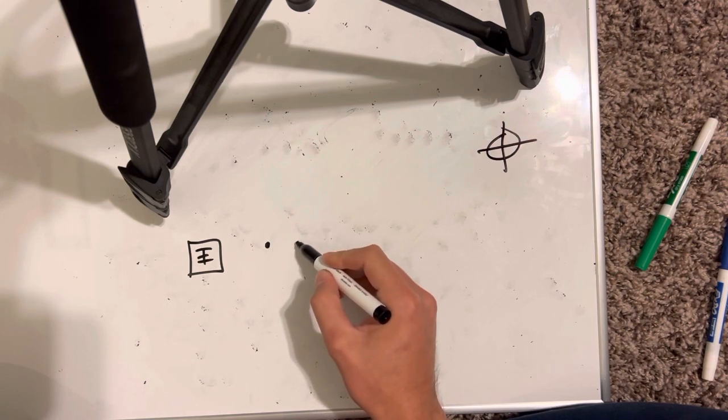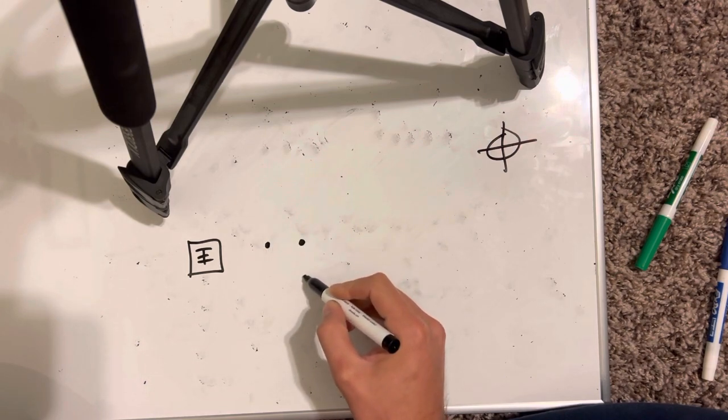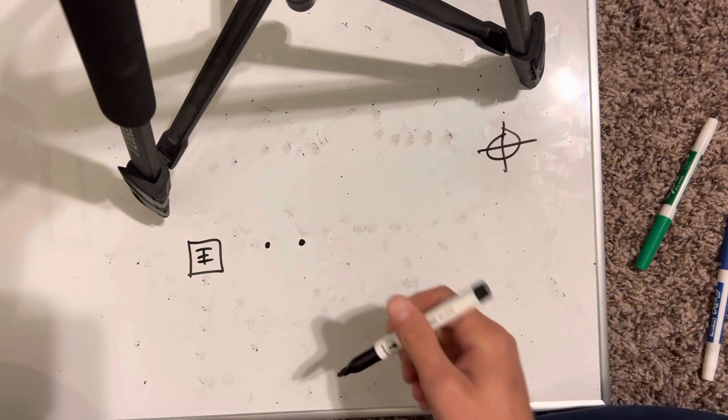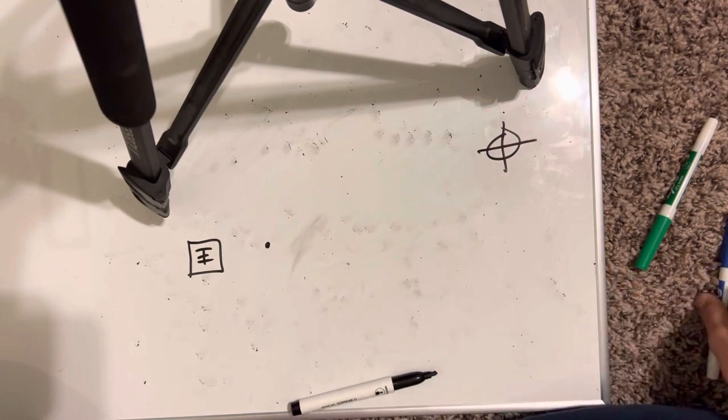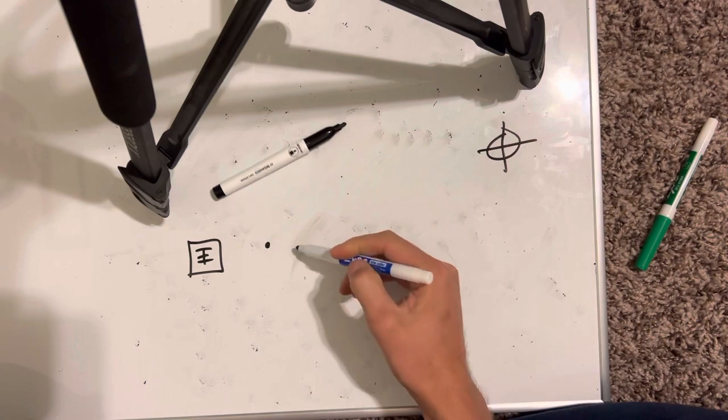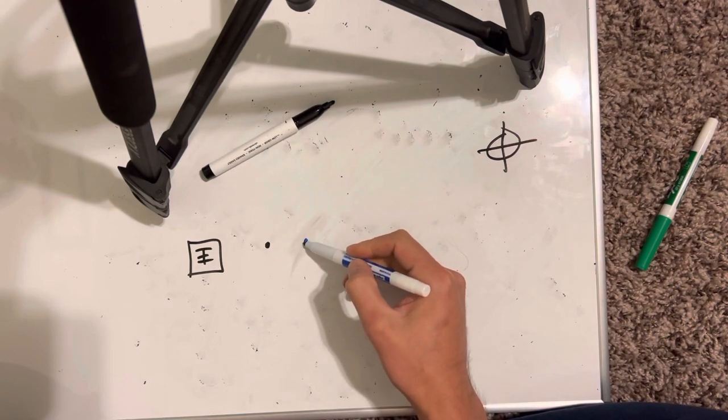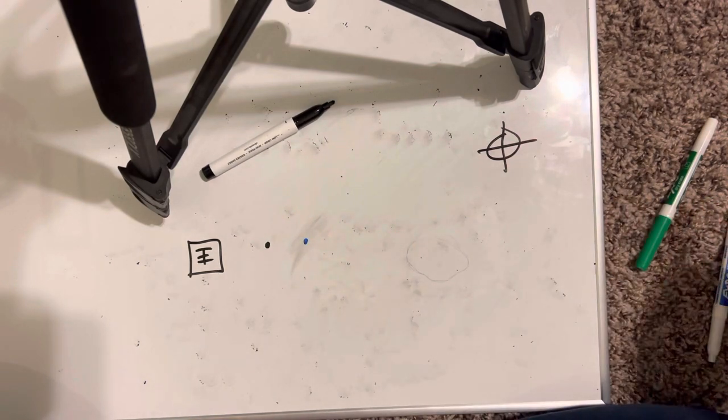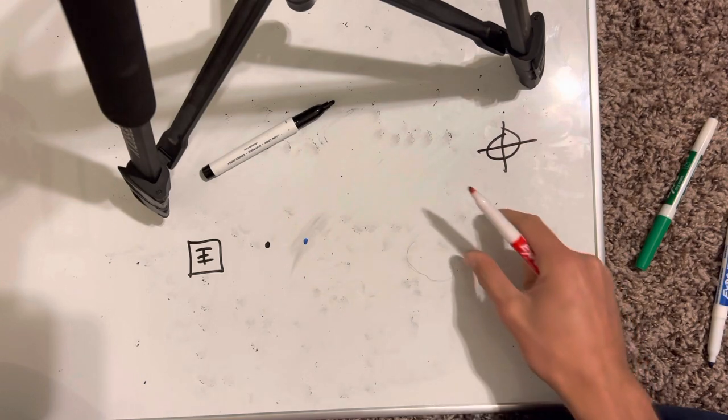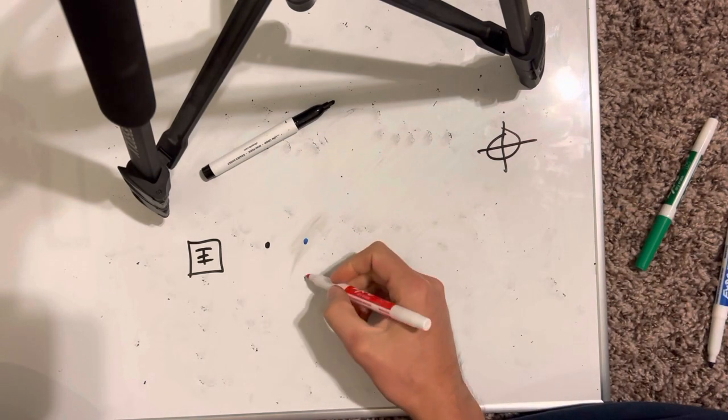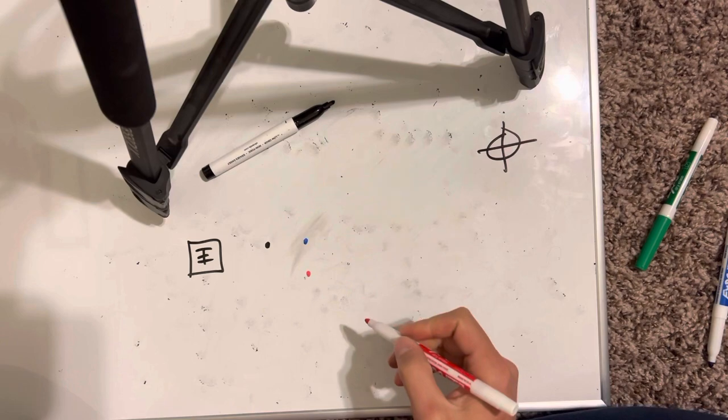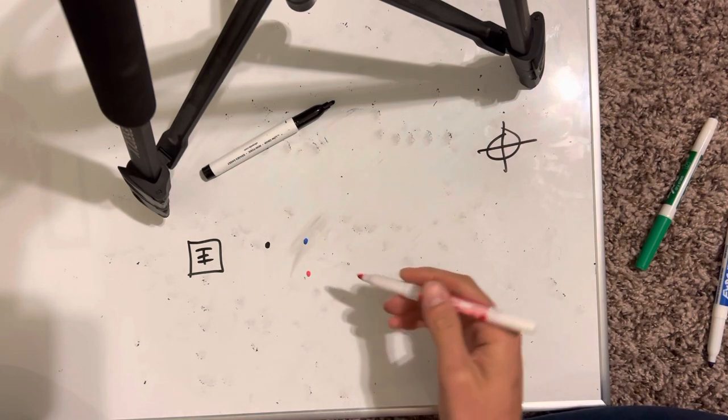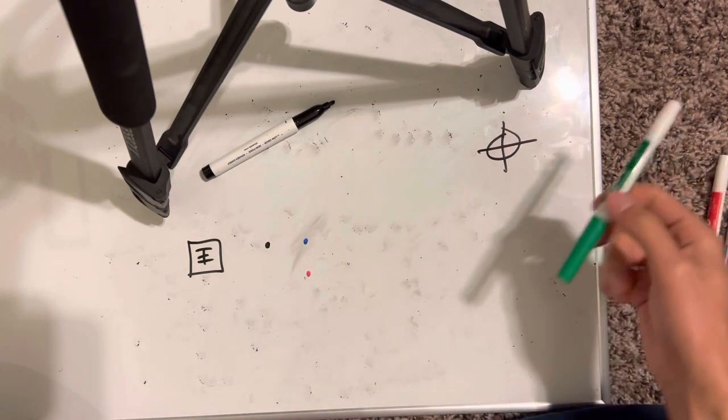You got your three-way switch right here. I'm going to draw this the easy way so it doesn't get confusing. You have your common right there, your traveler right there, and then another traveler. The travelers are going to be in blue and red and the commons are going to be in black.